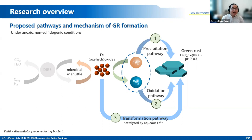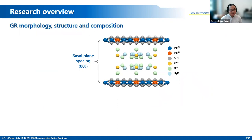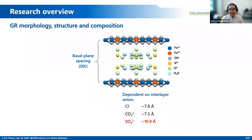Because green rust is metastable in comparison to other iron oxyhydroxides, over long periods of time it is possible that green rust transforms to other phases. A common transformation product under anoxic and non-sulfidic conditions is magnetite. In terms of its composition, green rust is composed of iron hydroxide sheets containing both iron(II) and iron(III). In between these iron hydroxide sheets, we have anions and water molecules. Depending on the environment where green rust formed, this interlayer anion can change — it can be chloride, carbonate, or sulfate.